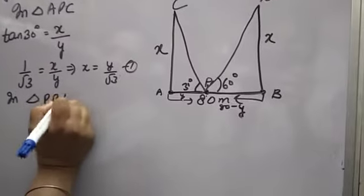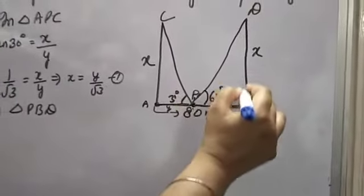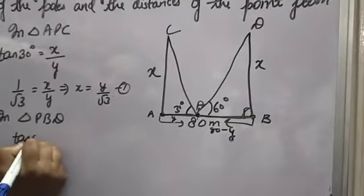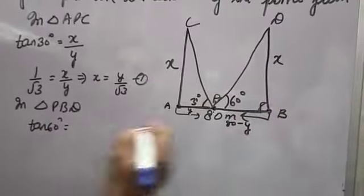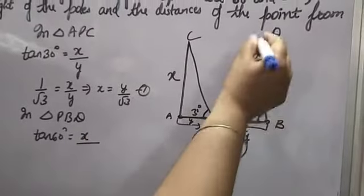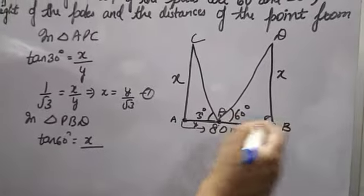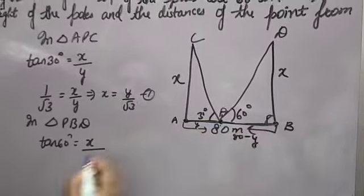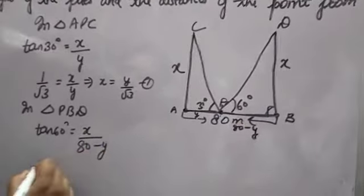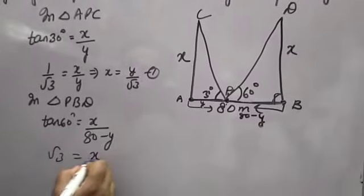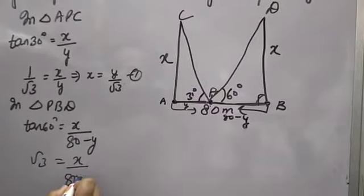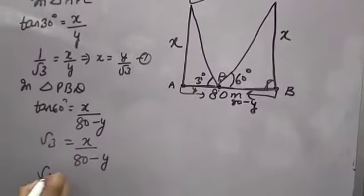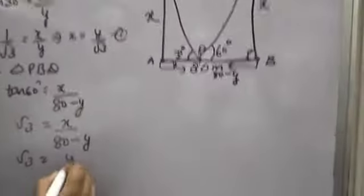In triangle PBD, this is right angle triangle, tan60° value, perpendicular means x, x over base, base total 80, 80 minus y. Tan60° equals root 3, so root 3 equals x over 80 minus y, x value y over root 3.